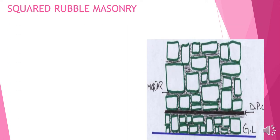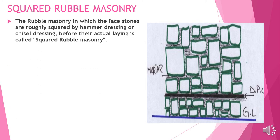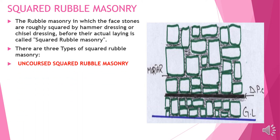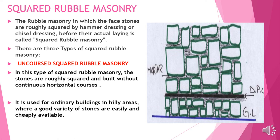Squared rubble masonry: the rubble masonry in which the face stones are roughly squared by hammer dressing or chisel dressing before laying is called square rubble masonry. There are three types. Uncourse square rubble masonry: the stones are roughly squared and built with continuous horizontal courses. It is used for ordinary buildings in hilly areas where good varieties of stone are easily and cheaply available.